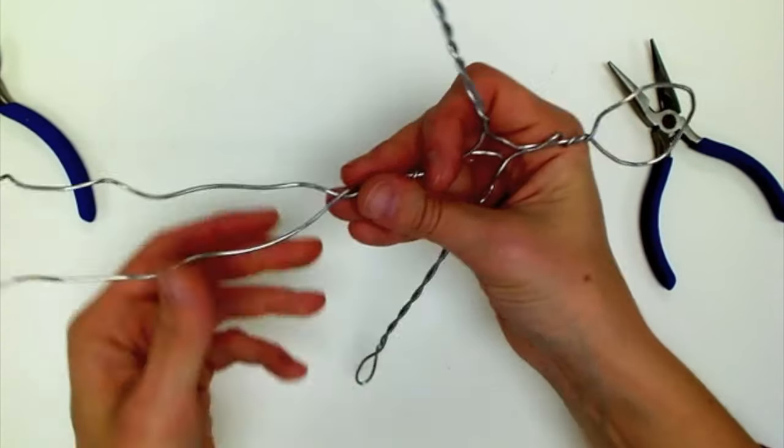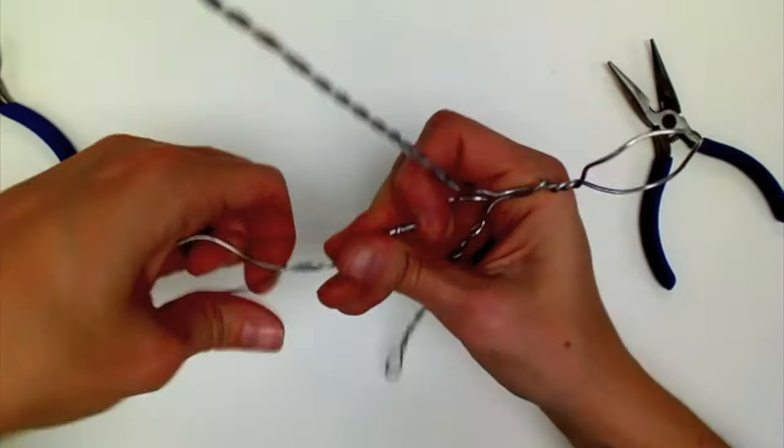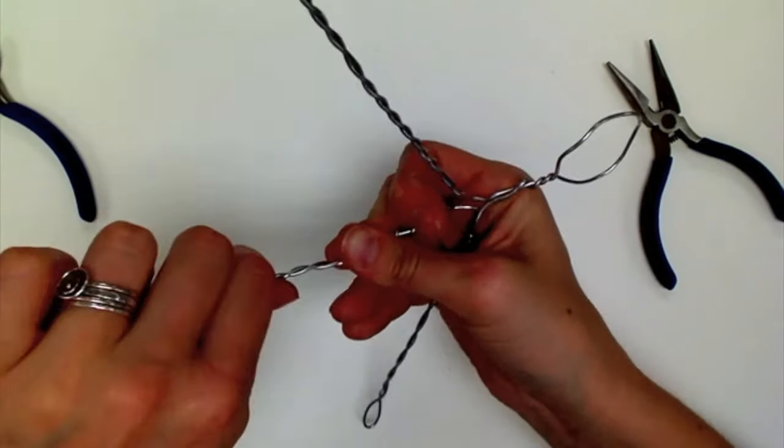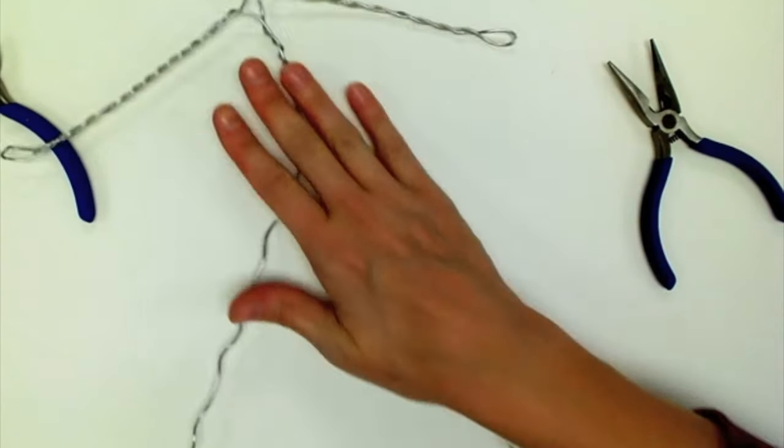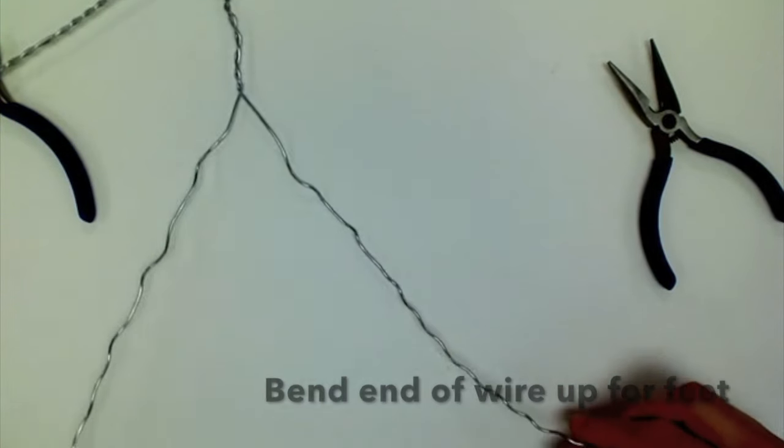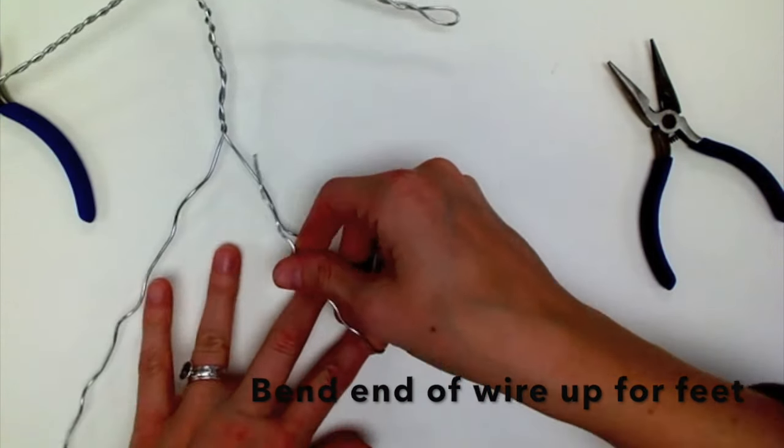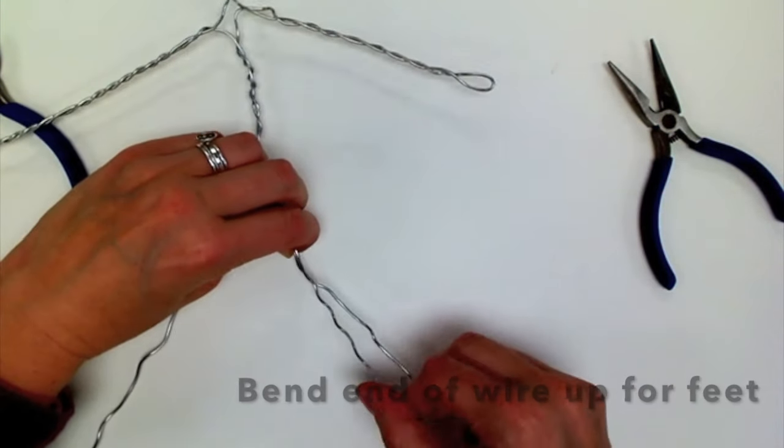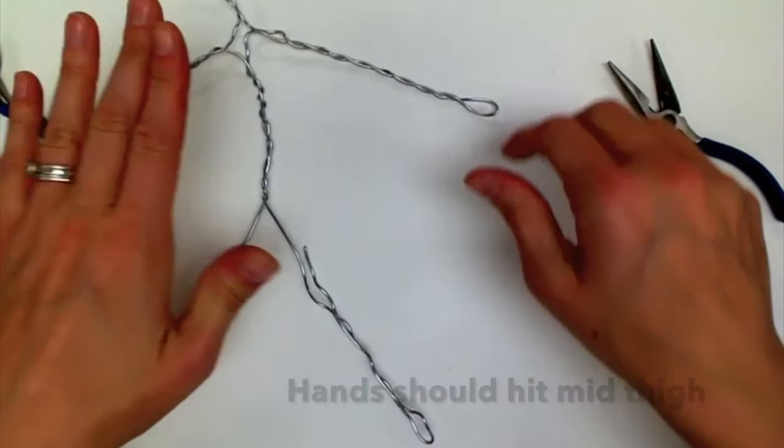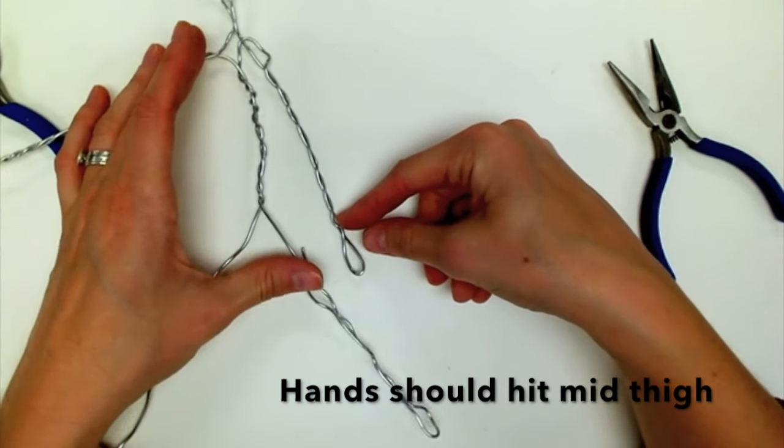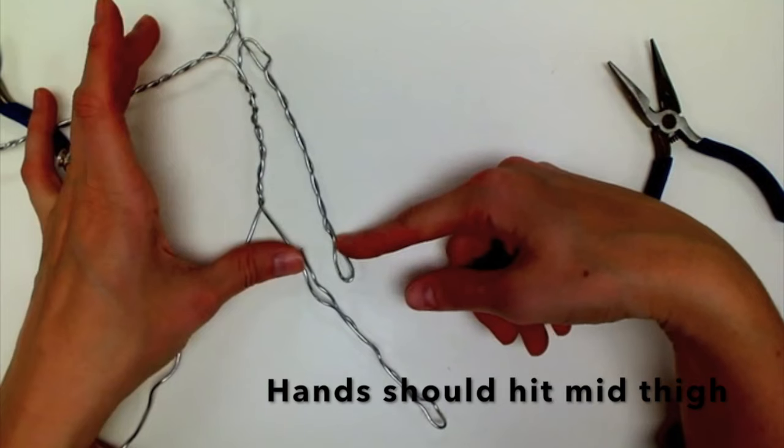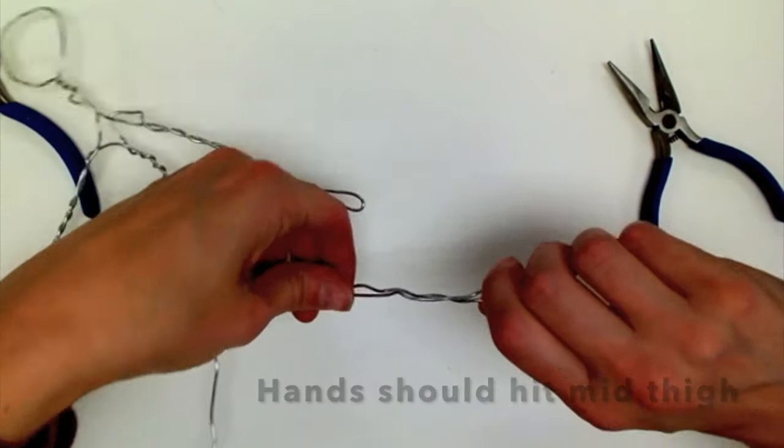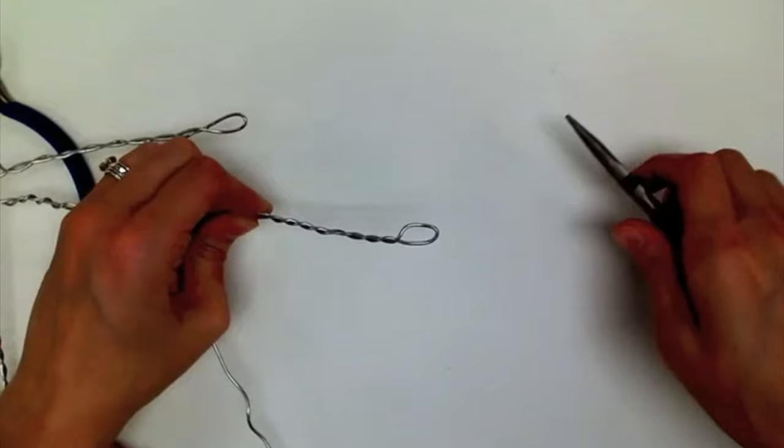For the legs, bend up the end of the wire to make the feet. Use your arms as a guideline—the hands should hit about mid-thigh, so make sure your legs are long enough. Twist together.